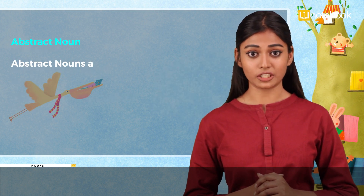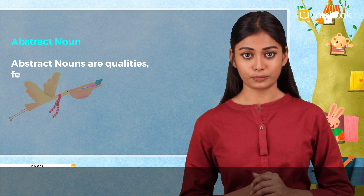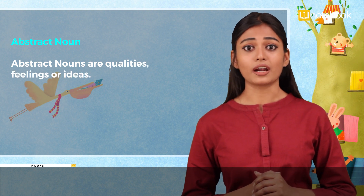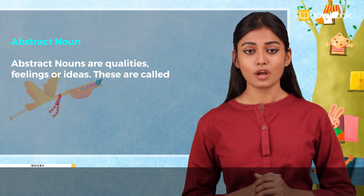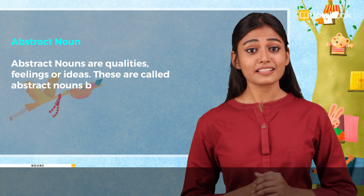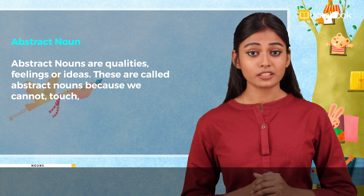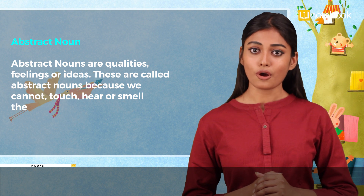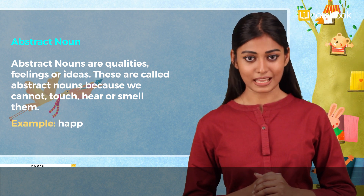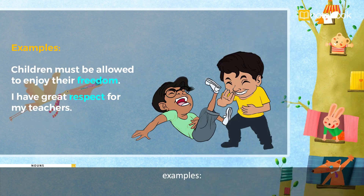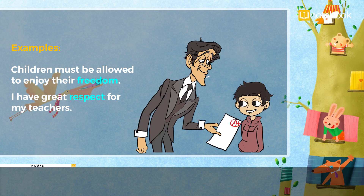The last kind of noun we shall discuss today is the abstract noun. Abstract nouns are qualities, feelings or ideas. These are called abstract nouns because we cannot touch, hear or smell them. For example, happiness. Examples: Children must be allowed to enjoy their freedom. I have great respect for my teachers.